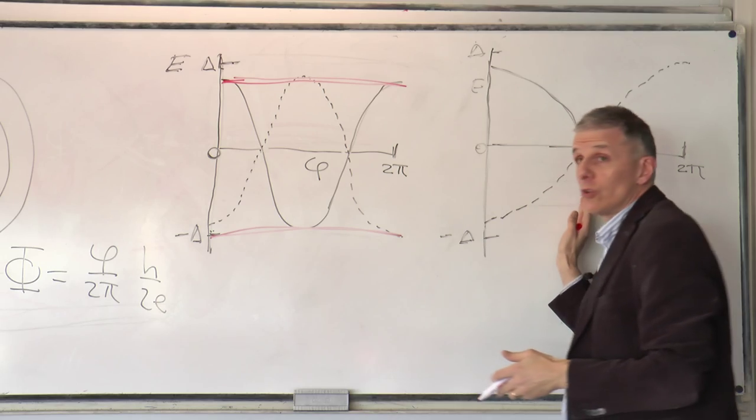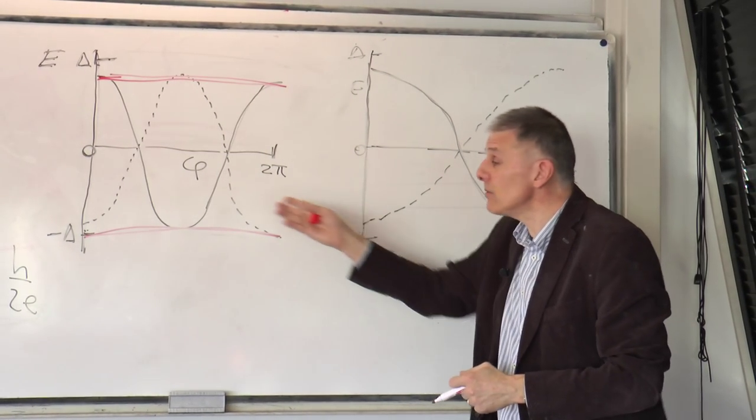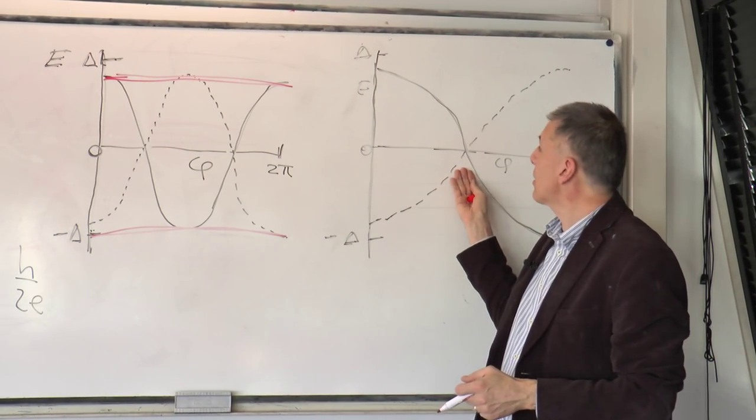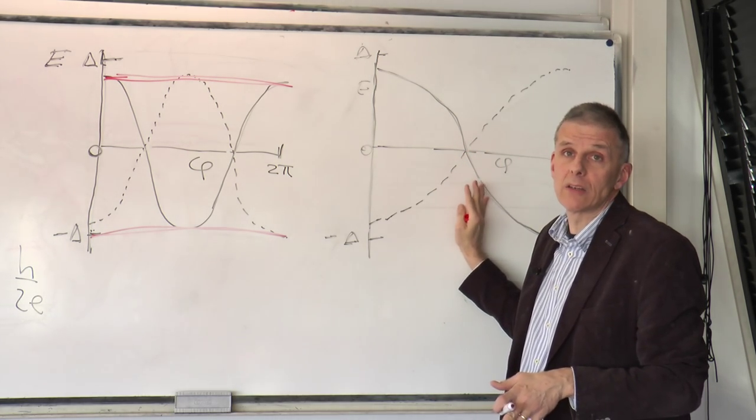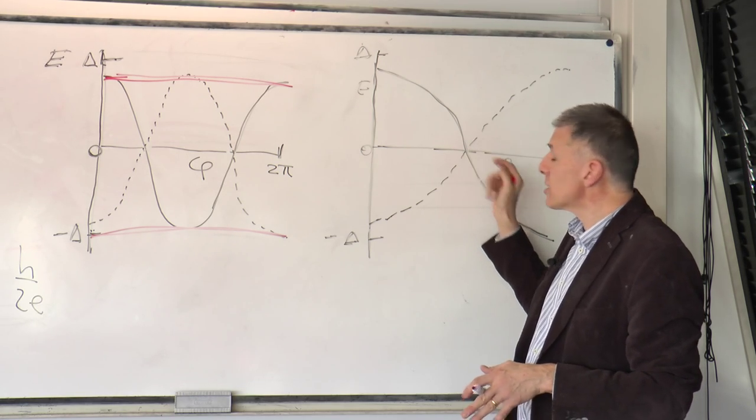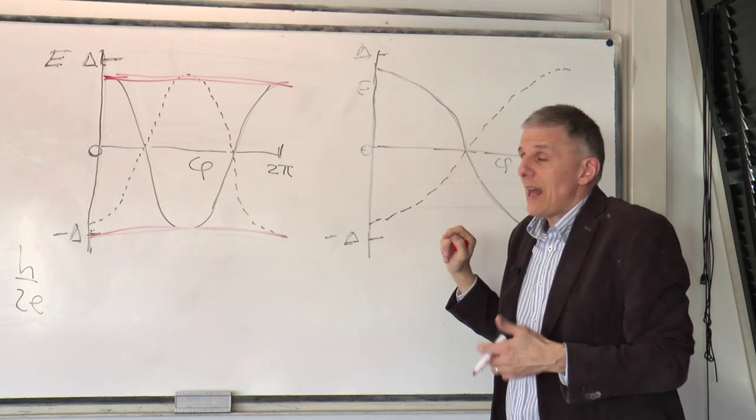Now for the topological superconductor. It cannot do that, because it doesn't have a partner. If there are three crossings, two of them can go away, but one will always remain. There is an odd number of them. So this crossing cannot go away.